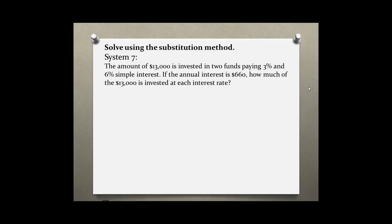Solve using the substitution method. System 7. An amount of $13,000 is invested in two funds paying 3% and 6% simple interest. If the annual interest is $660, how much of the $13,000 is invested at each interest rate?